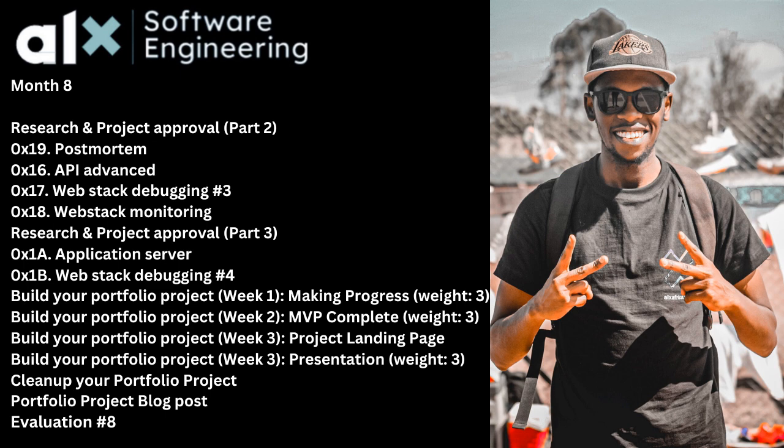Then you have research and project approval part three, where you fill in the MVP details and build up on the project. After that, you're building your portfolio project and making progress. In week two you have to create an MVP, in week three you create the project landing page, and week four is the presentation where you give a walkthrough of what you've built.